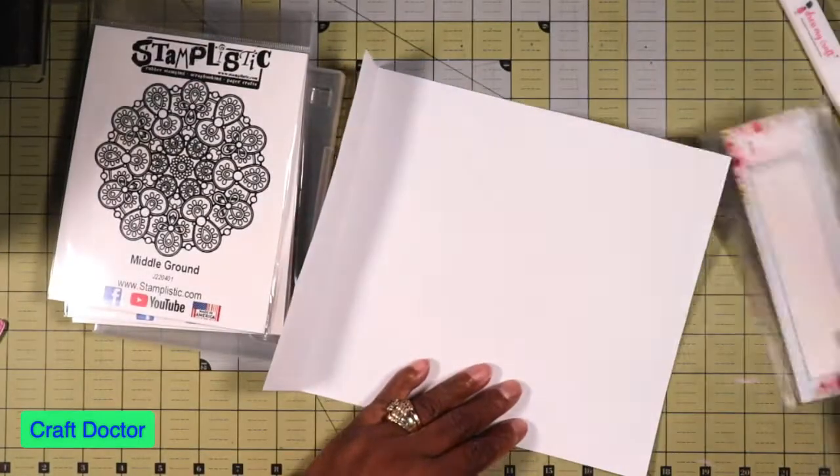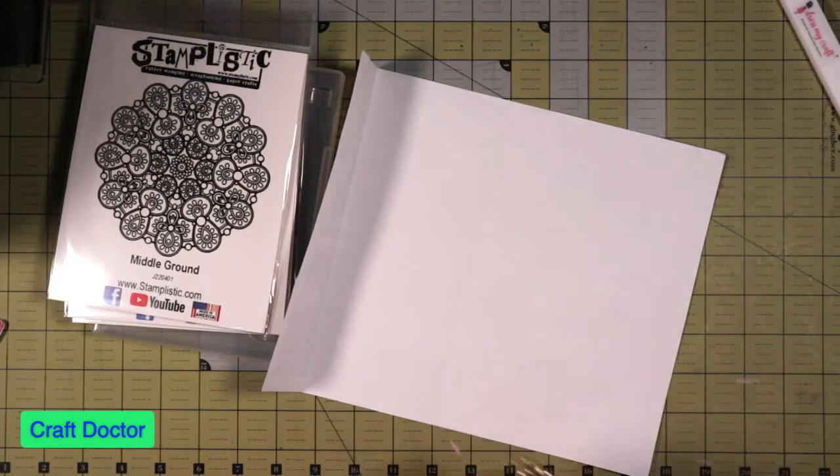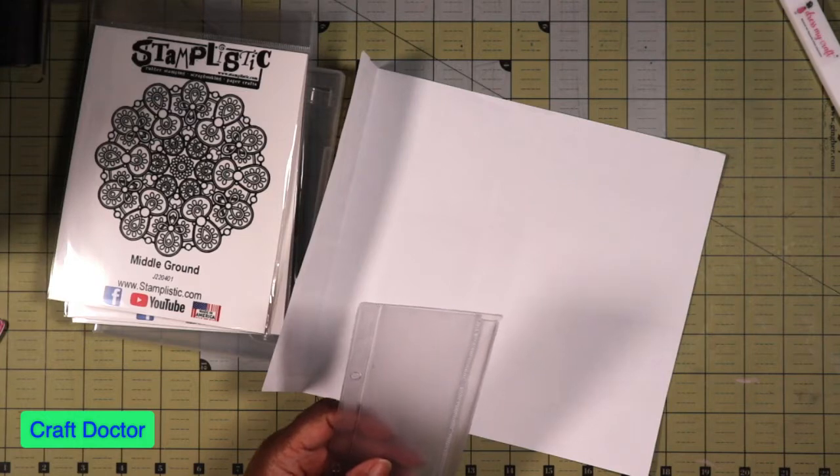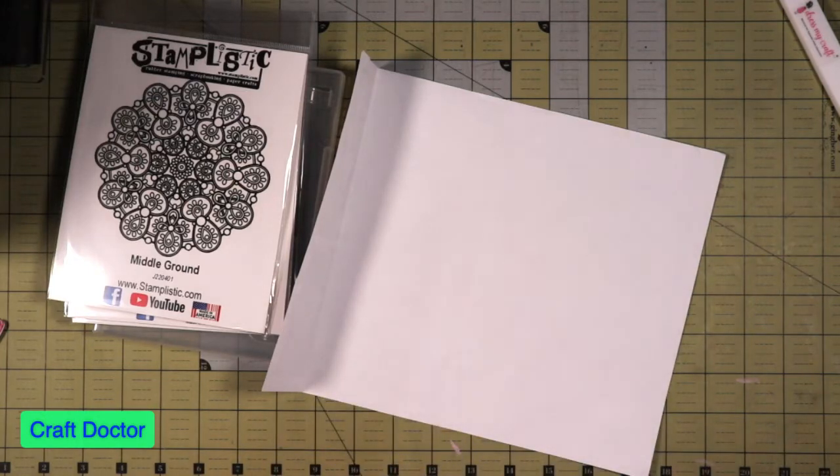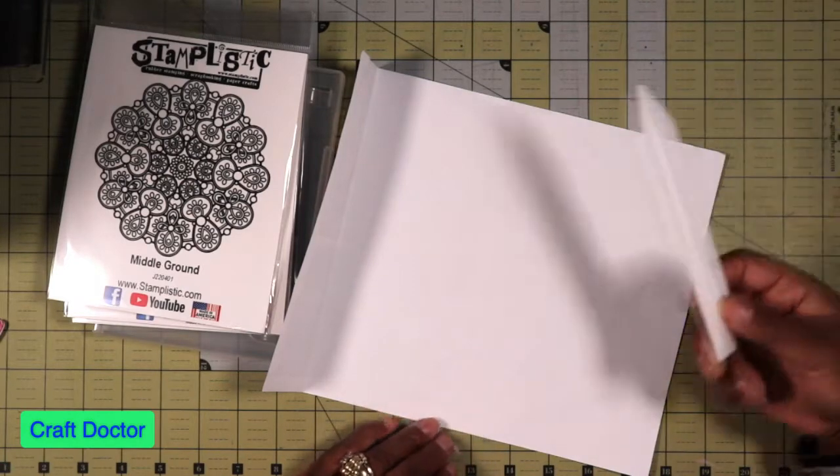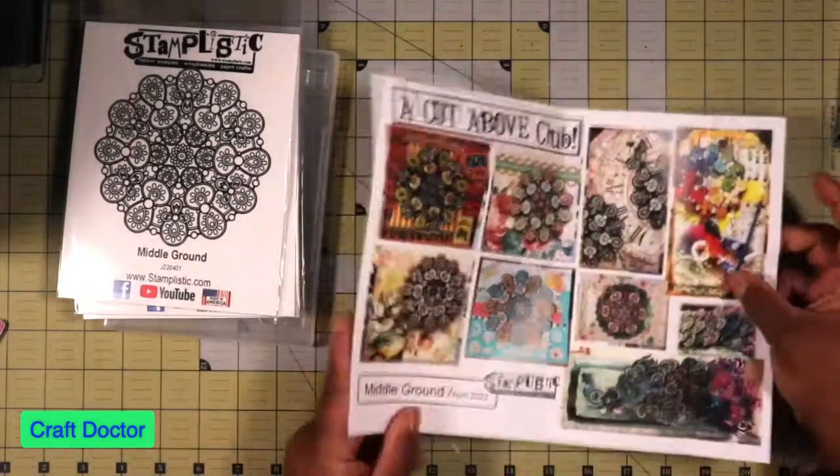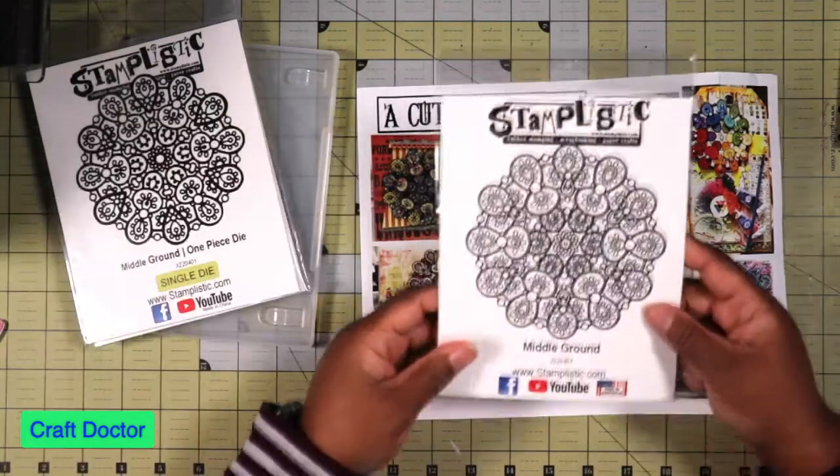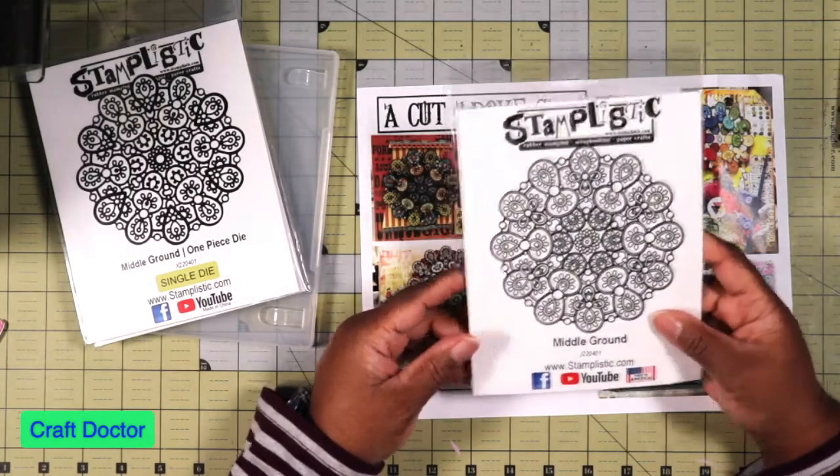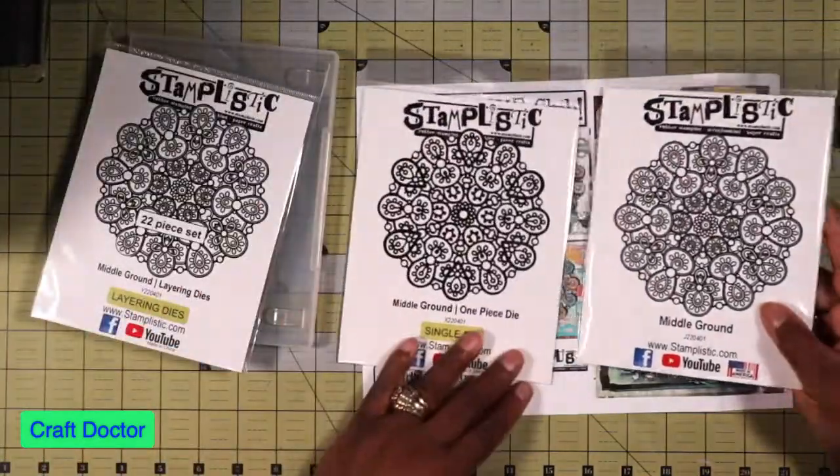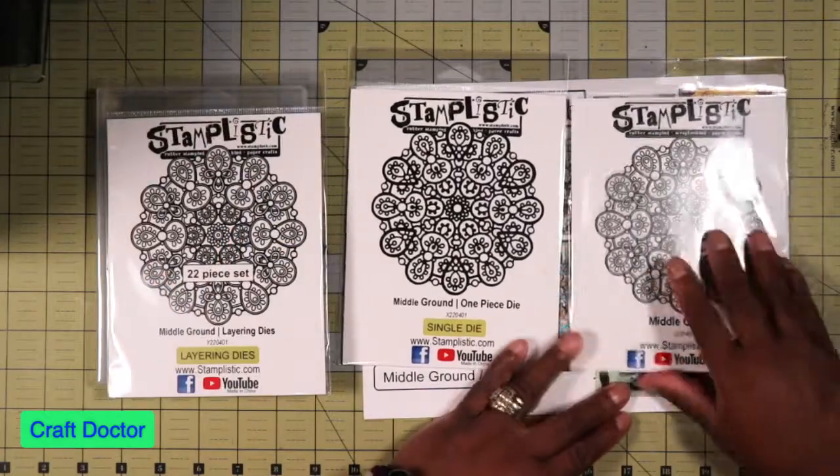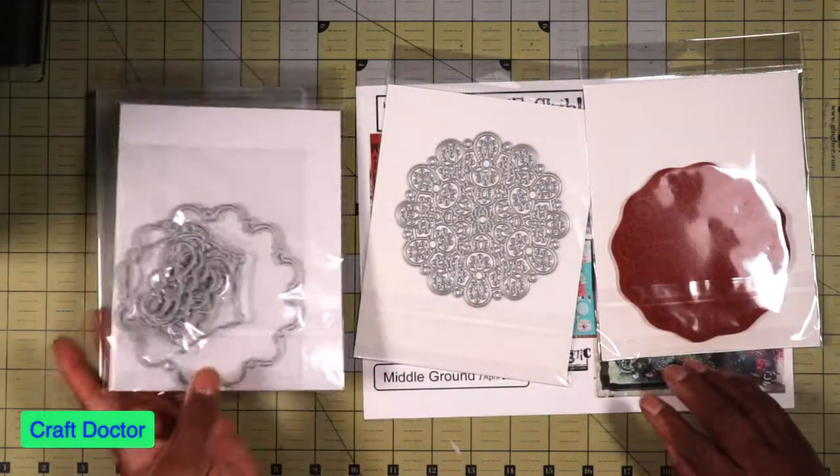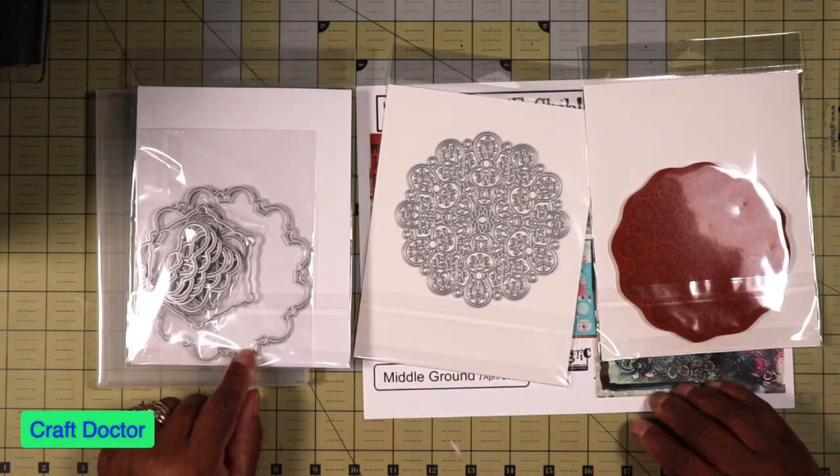I've never heard of this company before but this is the one they had at my local craft shop and I did not want to buy the other one I seen from Lawn Fawn which was the same thing and five dollars more, so I got this one. Then we have Cut Above and this one is called Middle Ground. It is another mandala style stamp and die set. This is the one that has the stamp and then you can cut out the whole die or you can cut out the pieces to it.